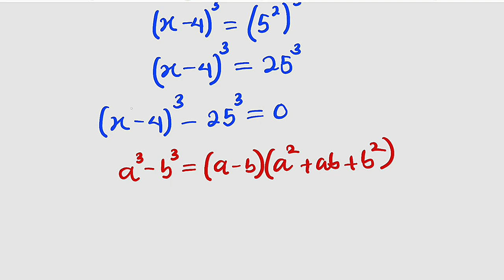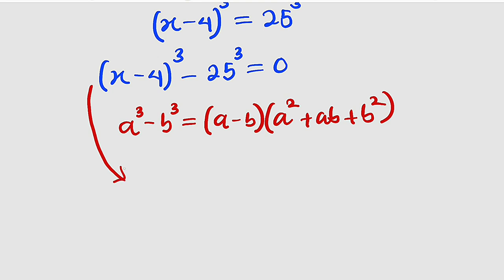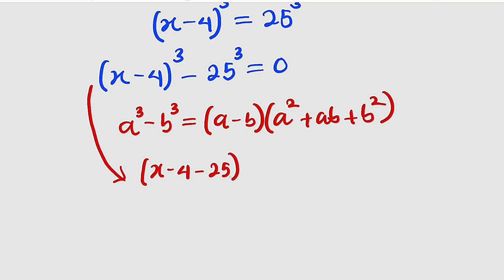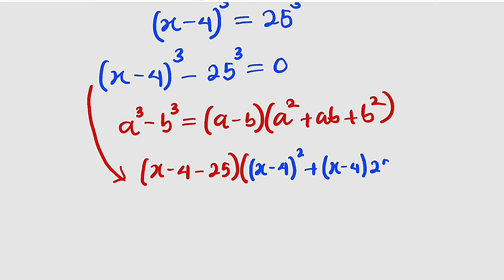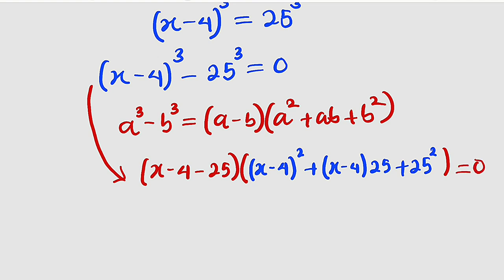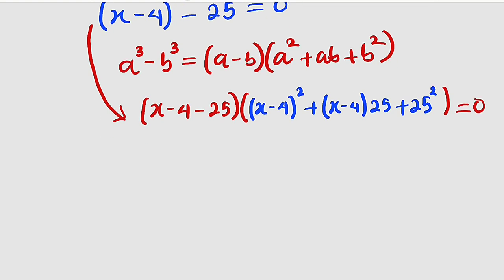This is just the factorized version of difference of two cubes, and we are going to apply the same thing here, for which x minus 4 is our a and 25 is our b. Therefore, we can factorize this as a minus b: a is x minus 4, then minus b which is 25. Then you multiply by a squared, that would be x minus 4 squared. Then plus ab — that is x minus 4 multiplied by 25. Then b squared, that is 25 squared. And we set everything equal to 0 because the right-hand side is 0. So let's further simplify this.